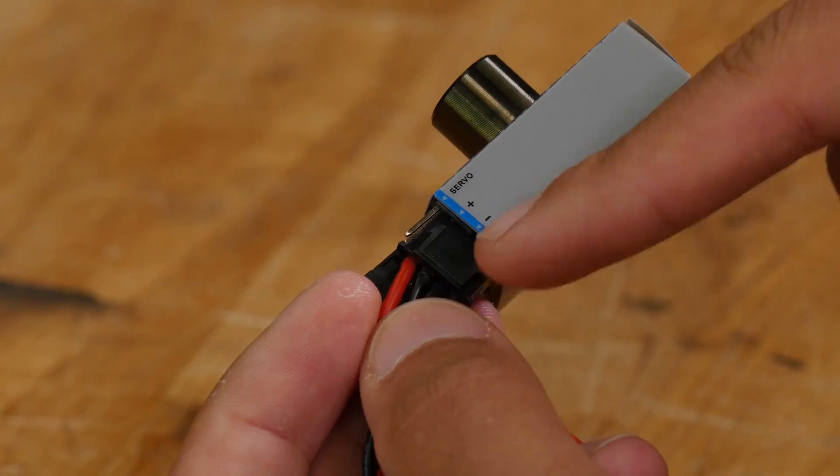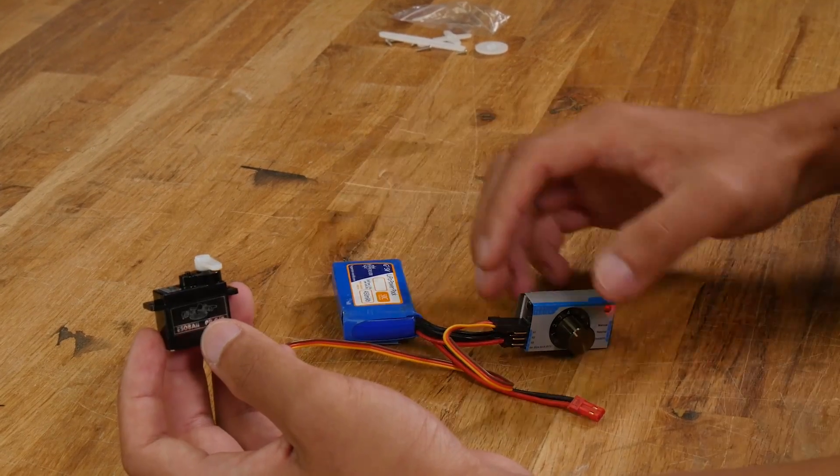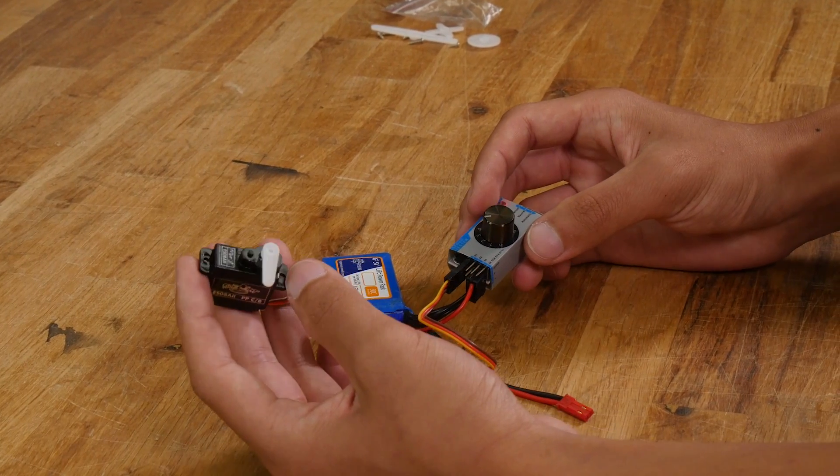Be sure not to plug this into the top servo signal rail because that can mess up your servo tester. Now that both our battery and servo are connected, we can go ahead and center the servo.